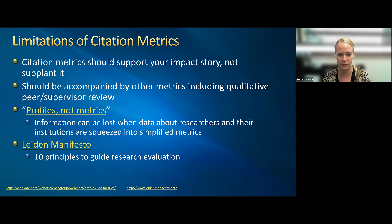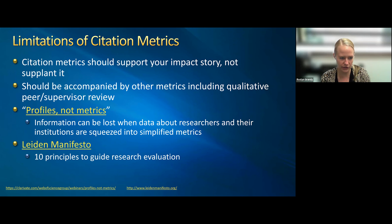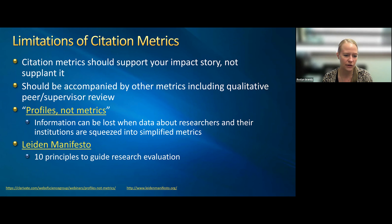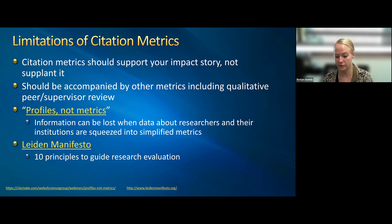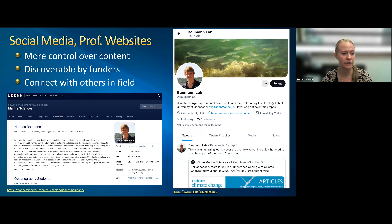Citation metrics should support your impact story and never supplant or completely encompass it. They should always be accompanied by other metrics, including peer and supervisor review. There are resources available — including the Leiden Manifesto, which provides principles to guide research evaluation — if you want to encourage your department not to overemphasize metrics.